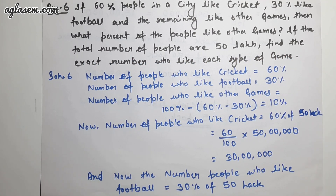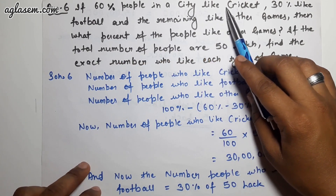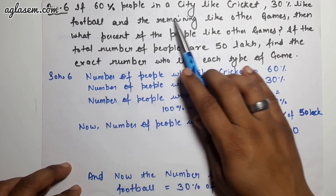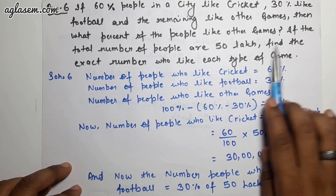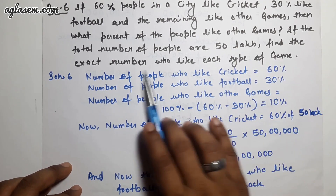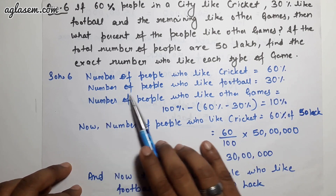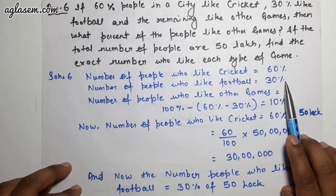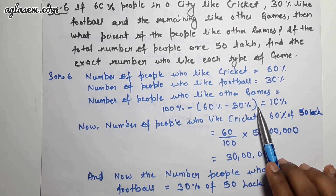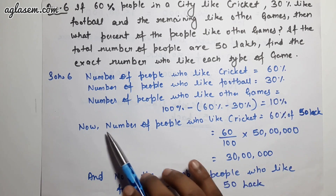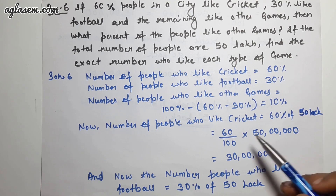Question 6: 60% of people like cricket, 30% like football, and the remaining like other games. Total people = 50 lakh. Percentage who like other games = 100% − 60% − 30% = 10%. People who like cricket = 60% of 50 lakh = (60/100) × 50 lakh = 30 lakh.